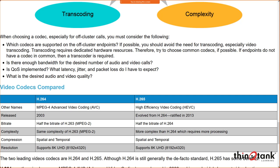MPEG-4 cut the bit rate in half while maintaining similar quality to H.263. H.264 supports both spatial and temporal compression and resolutions up to 8K ultra-high def (8192 by 4320). H.265 evolved from H.264, released in 2013, with the bit rate halved again while maintaining similar quality.